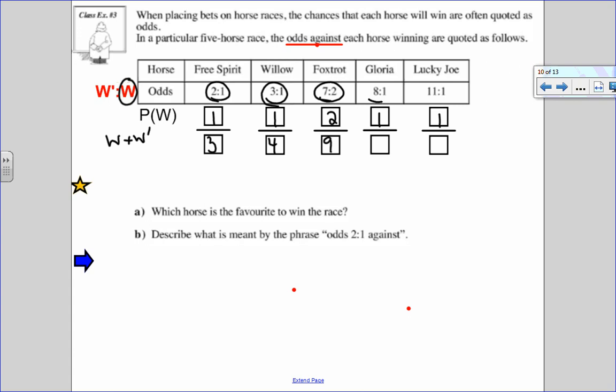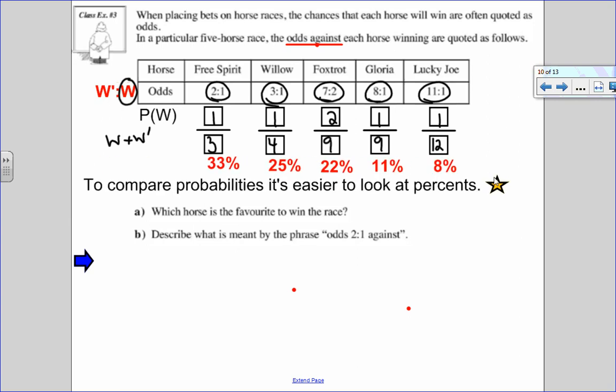Okay, so now I'm looking at the probability of winning. And again, looking at that, I'm still not totally sure because these are all different fractions with different denominators. So I'm going to use my calculator to help me out. And I'm going to change them all to percentages, because now I can compare them because I know percentages, the higher the number, the better the chance of winning. So looking at all of these percentages, I can see that this one here is the highest. So I know that free spirit is the horse that is favored to win.